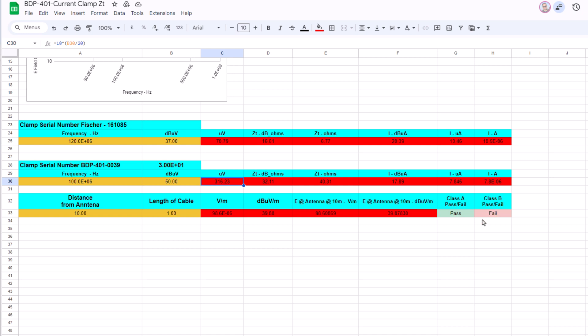Also it compares it to the EMC standards radiated emissions table and it gives you a pass and a fail. And you can see now that it is failing the class B but it's passing the class A, and it does all of these equations automatically.